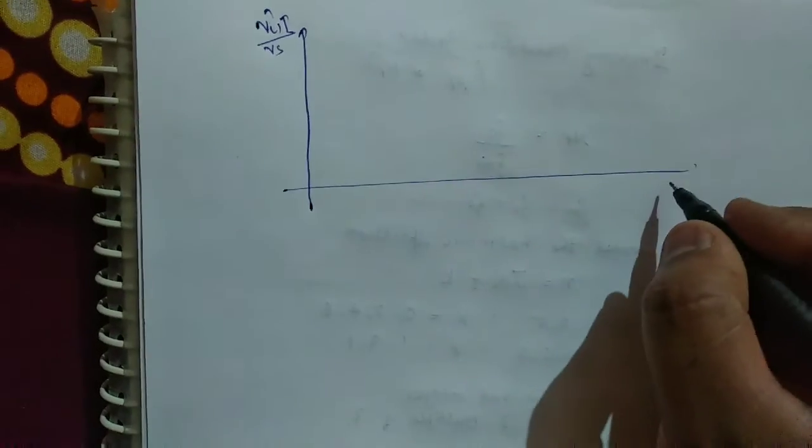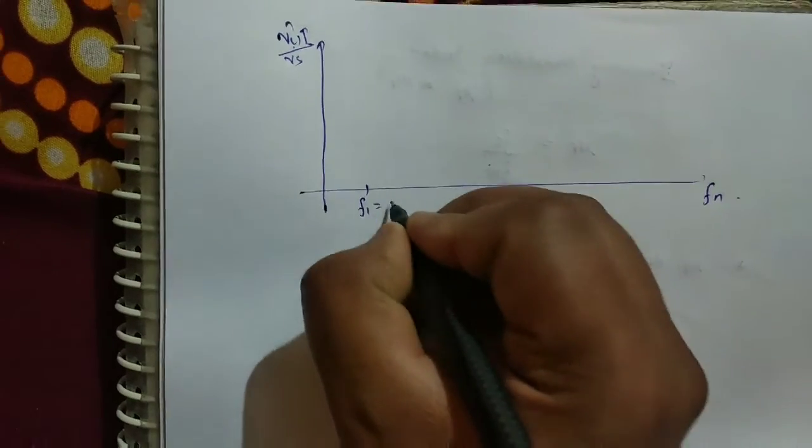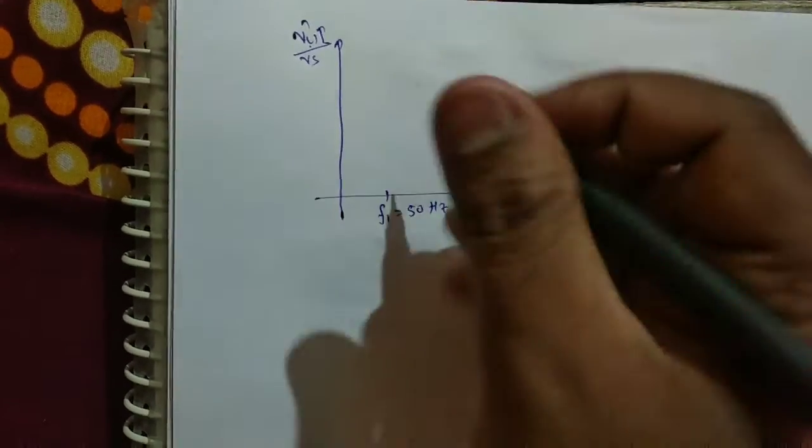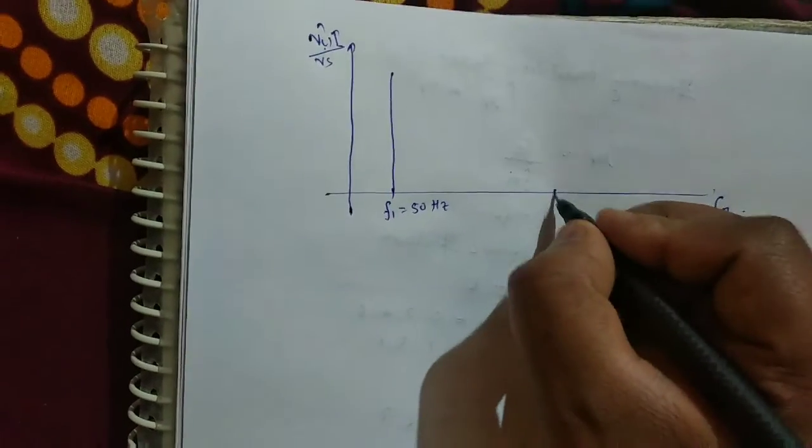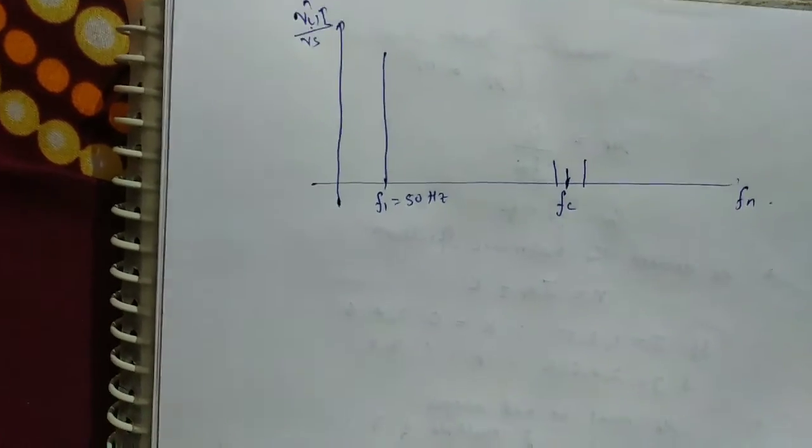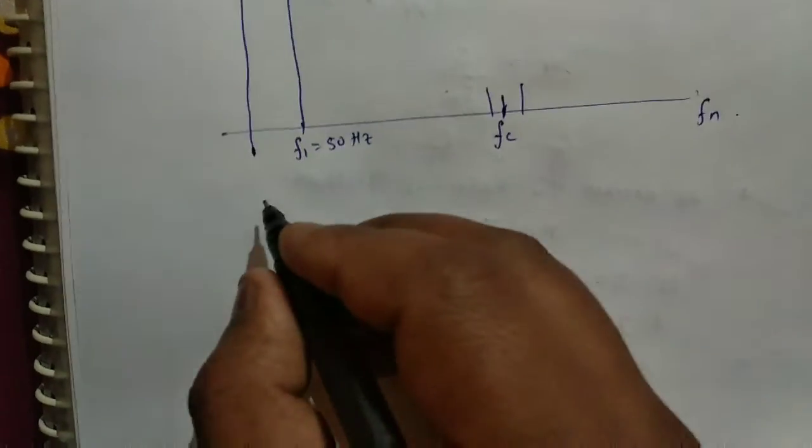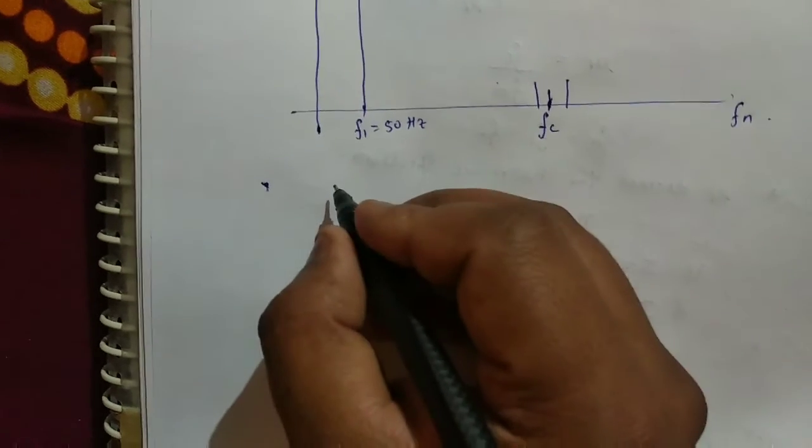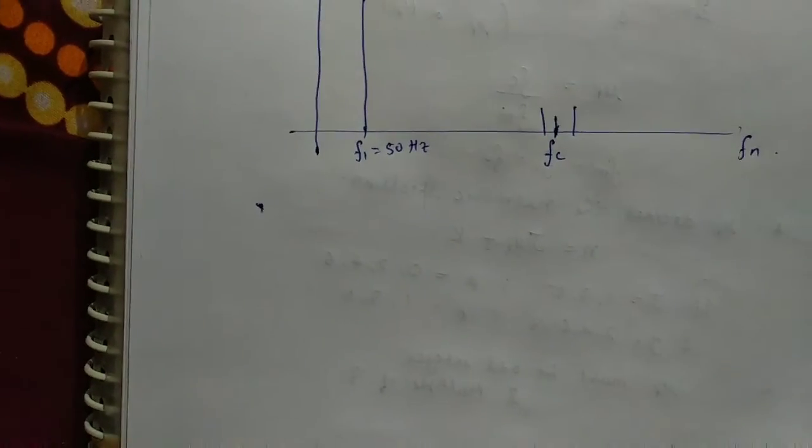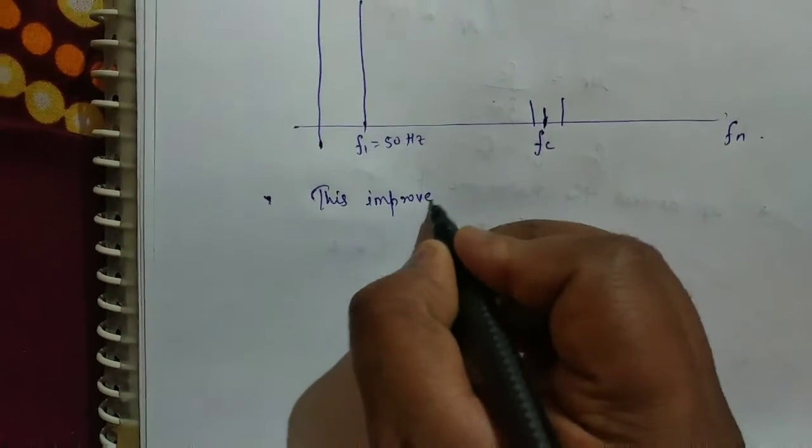Now see harmonic spectrum: if V_L1 by V_S and here F_n, if for frequency F1 is equal to 50 hertz, this will be the magnitude. For F_C, magnitude will be this, like this. So at higher frequency, harmonics will be less.